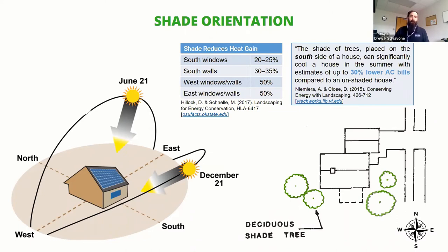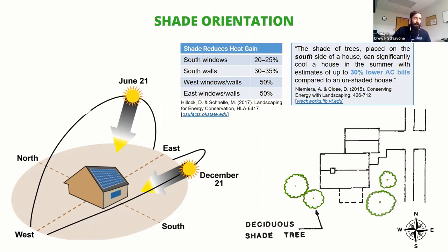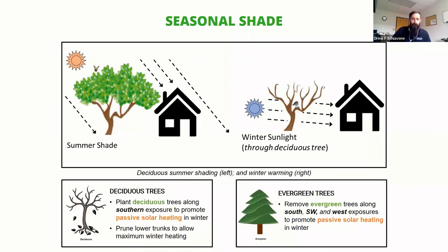There's no reason to have trees on the north because the sun is never to the north of your house, so it's not going to do any good shading from that vantage point. One statistic from a study found 30% lower air conditioning bills in the summer, and they had about 20% or more roof shading. That's typically a goal — to aim for shading about 20% of your roof.